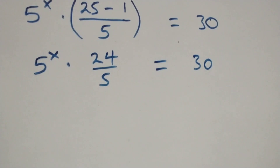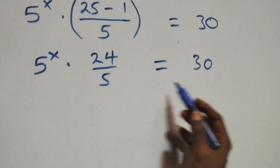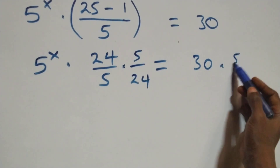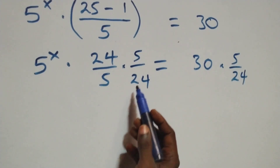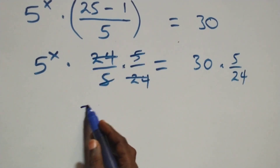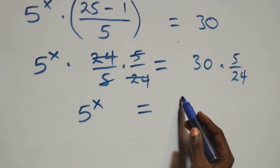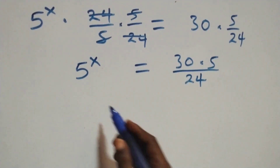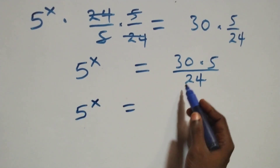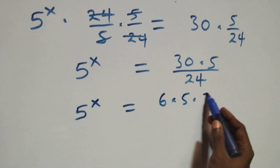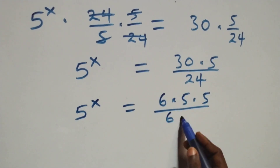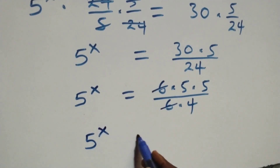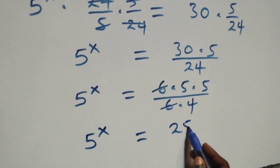Next, we remove the 24 over 5 by multiplying both sides by the reciprocal, that is 5 over 24. The 24s cancel each other and the 5s cancel each other, leaving 5 raised to power x equals 30 times 5 over 24. This simplifies to 5 raised to power x equals 25 over 4.